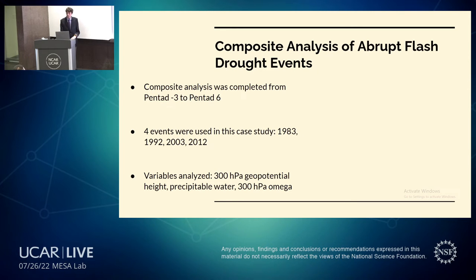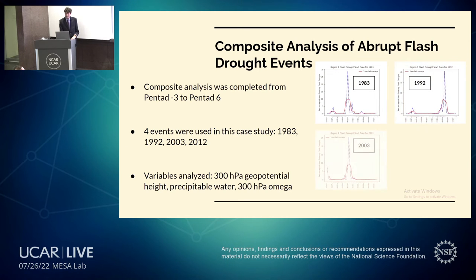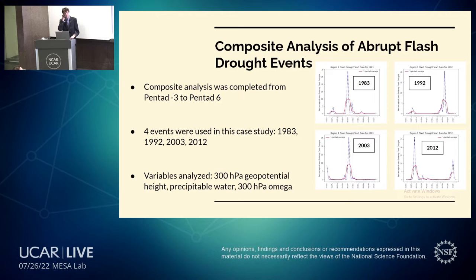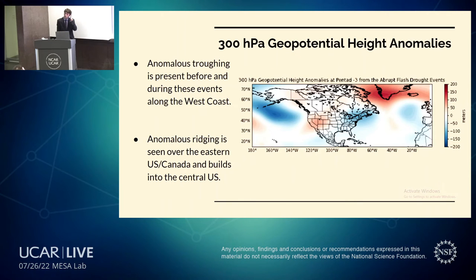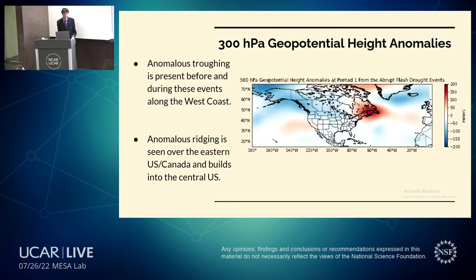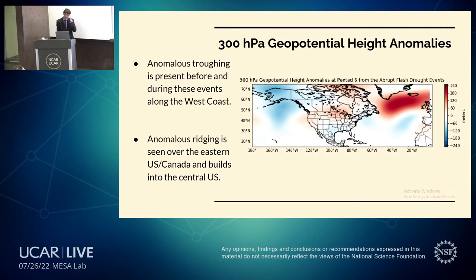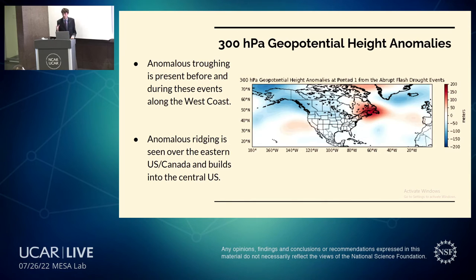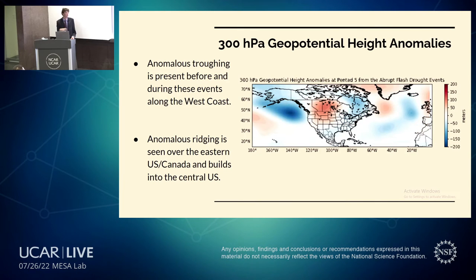We used composite analysis from four different events: 1983, 1992, 2003, and 2012. Within each event, there's a clear peak of flash drought initialization, with 20 to 30 percent of the entire domain going into flash drought at one point in time. Within the 300 geopotential height anomalies, the GIF goes from Pentad negative three to Pentad six — 15 days prior to the event start until 30 days after. Especially at Pentads five and six, there is an anomalous trough off the west coast helping to build a ridge in place during the course of the event. The signals at Pentad four and five are really clear.